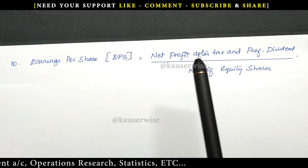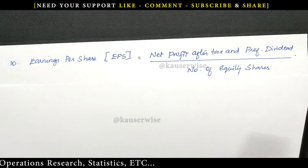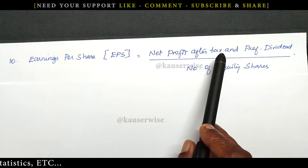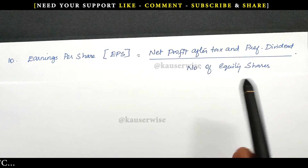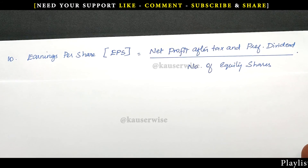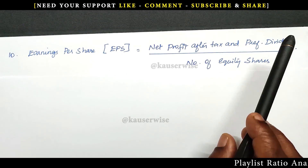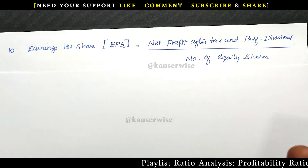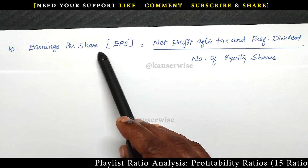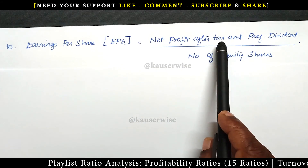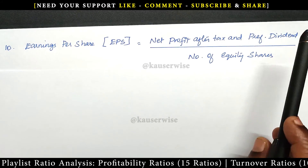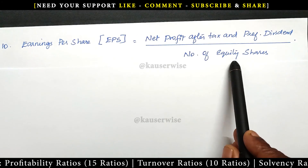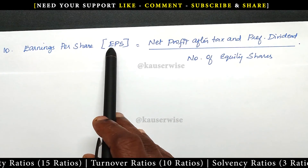Earning per share equals profit available to equity shareholders. The profit after interest and after tax is the remaining profit available to shareholders. In the capital structure, if there is any preferential shareholder, then you have to subtract preferential dividend. Then you will get the residual profit that is available to equity shareholders. So again: net profit after tax and preferential dividend divided by number of equity shares gives earnings per share.